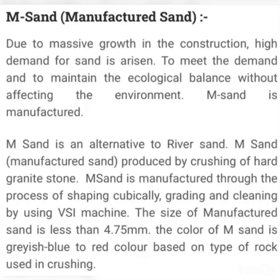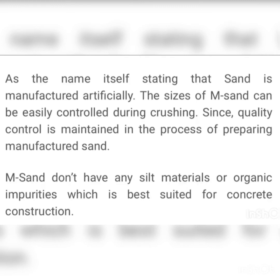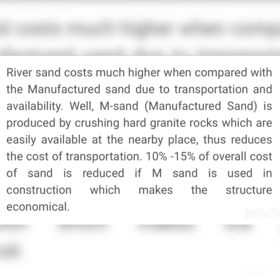M sand stands for manufactured sand, which is man-made sand generally produced by crushing hard granite rocks. The size of manufactured sand is less than 4.75 mm, and its color is grayish-blue to reddish depending on the type of stone crushed. In many places in India, like Kerala, M sand is used because river sand is not readily available. M sand provides good strength in concrete works, and it is also more cost-effective — river sand is more costly than manufactured sand.